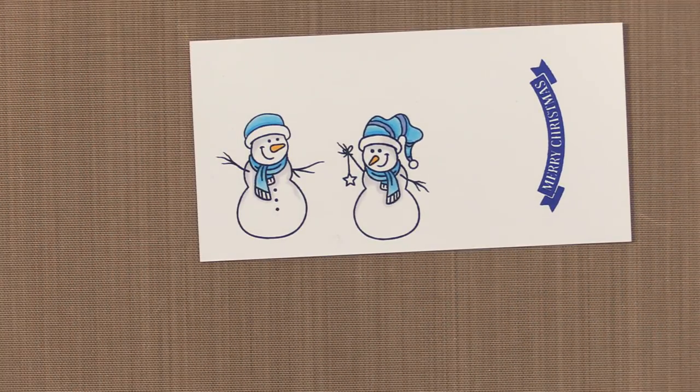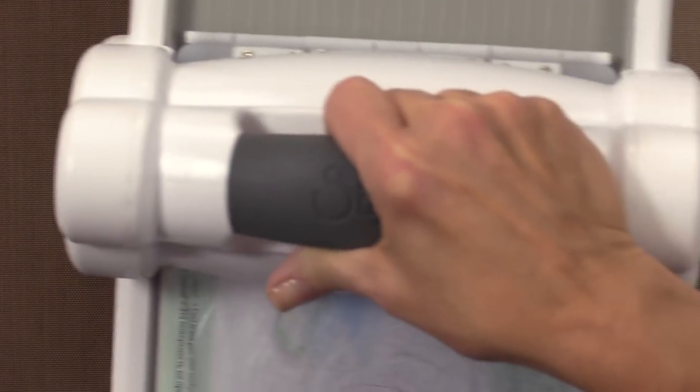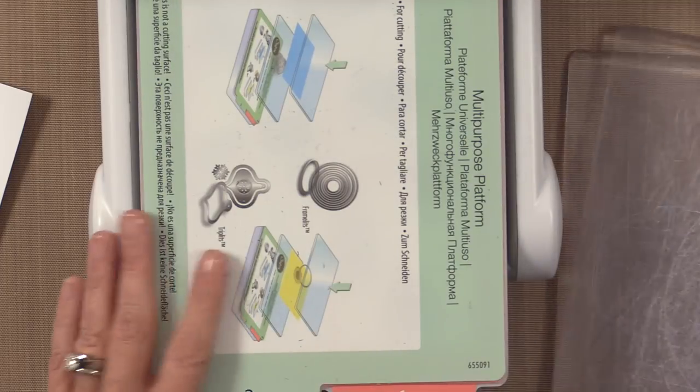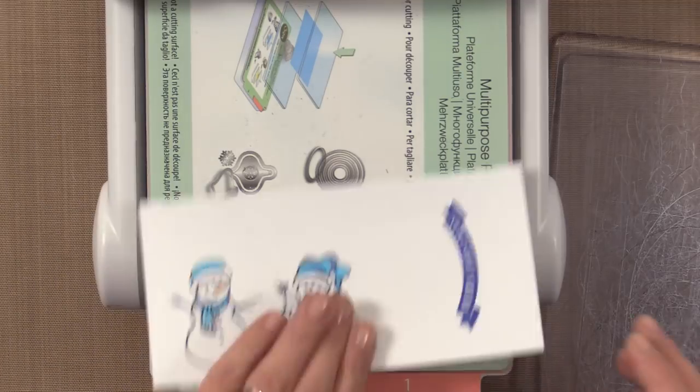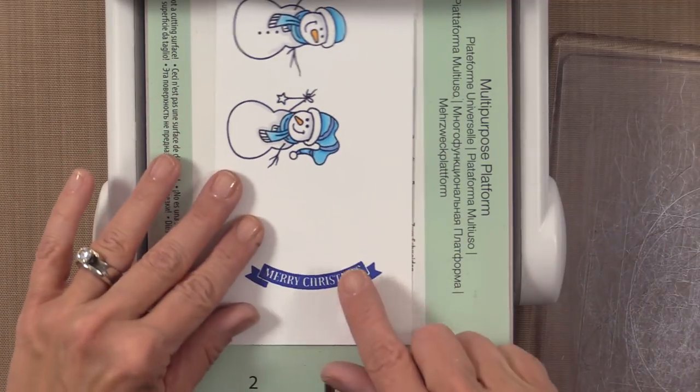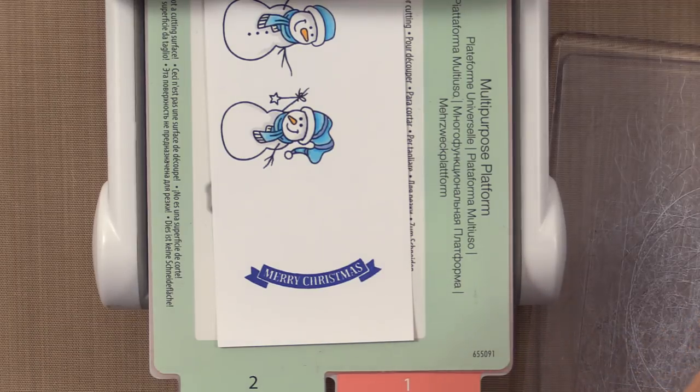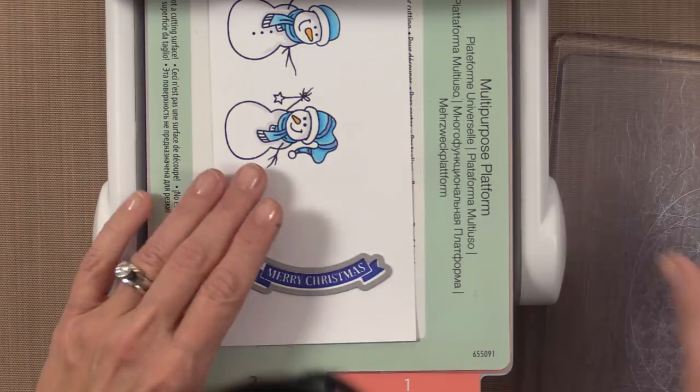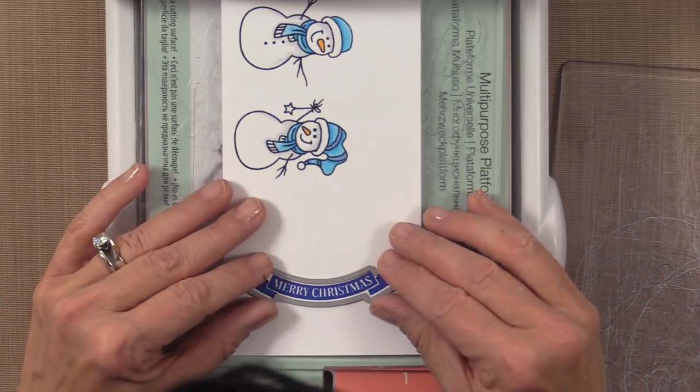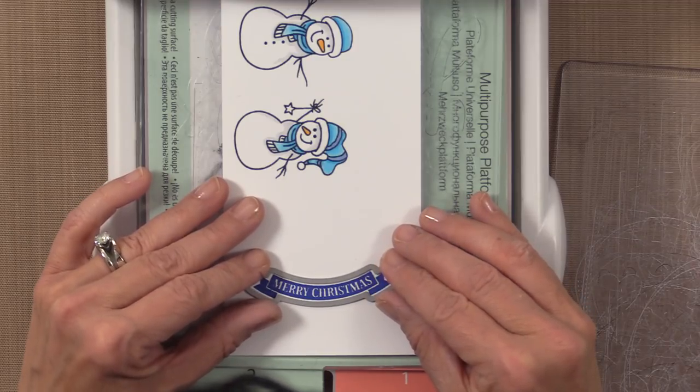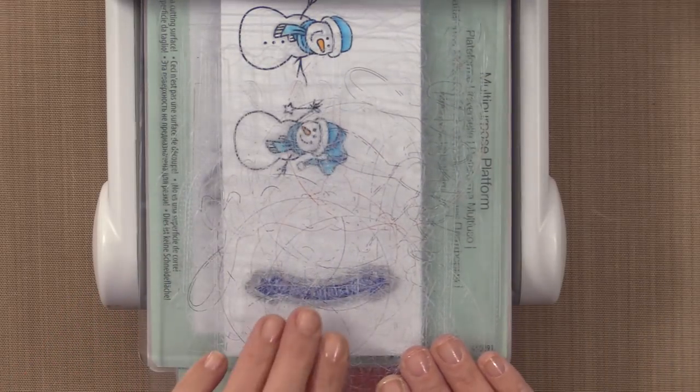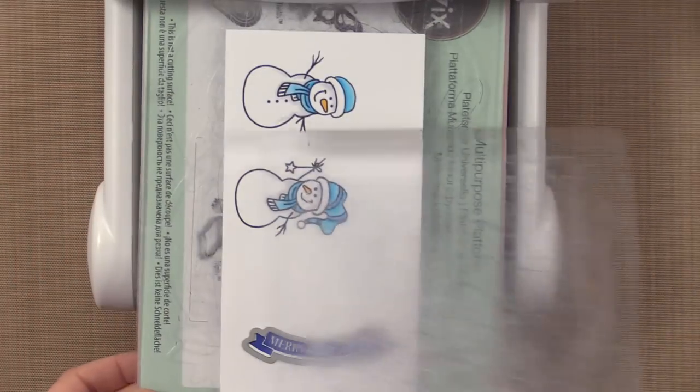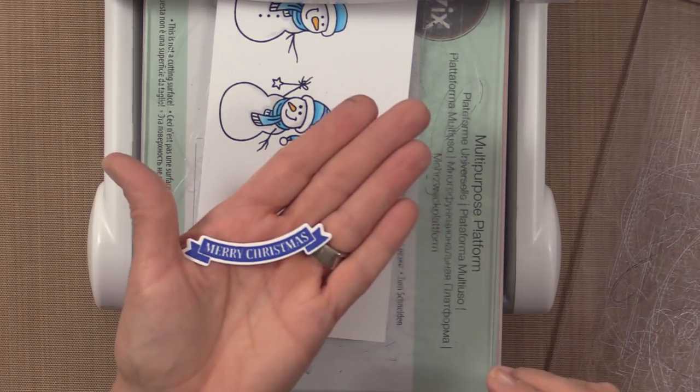So now I'm going to grab my Big Shot. You can use any die cutting machine that you want. The Cuddlebug works great, the Little Sister, the new Spellbinders machine. Any of those machines will work very well. So let's cut this one out first. I'm going to grab that set of dies. I occasionally like to use some washi tape to secure things if I feel like it's going to move too much, but I think this will be a pretty easy cut. I'm going to just line that up, lay my plate on top, and run it through. Well that looks pretty good. So there's the little banner, Merry Christmas.